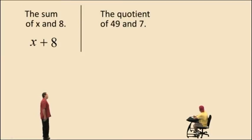Here we have the quotient of 49 and 7. Remember, the quotient means division. So the quotient of what two things? 49 and 7.